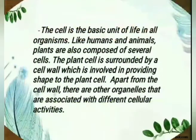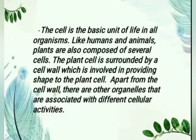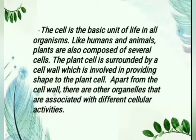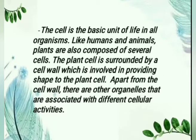The cell is the basic unit of life in all organisms. Like humans and animals, plants are composed of several cells. The plant cell is surrounded by a cell wall which is involved in providing shape to the plant cell. Apart from the cell wall, there are other organelles associated with different cellular activities. Plant cells, like animal cells, are eukaryotic, meaning they have a membrane-bound nucleus and organelles. While animal cells have a cell membrane, plant cells also have a cell wall surrounding the cell membrane.